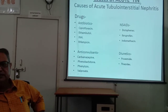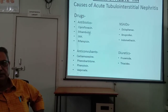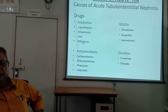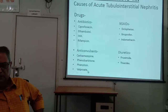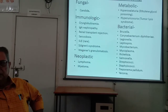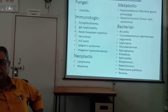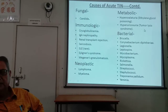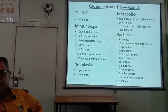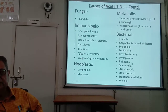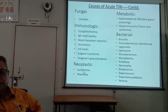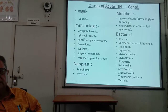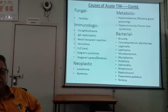Causes of acute tubulo-interstitial nephritis include drugs — antibiotics (ciprofloxacin, ethambutol, isoniazid, rifampicin), NSAIDs (diclofenac, ibuprofen, indomethacin), diuretics (furosemide, thiazides), anticonvulsants (carbamazepine, phenobarbitone, phenytoin, sodium valproate). Also fungal (Candida), metabolic causes (hyperoxaluria, hyperuricosuria, tumor lysis syndrome), and bacterial causes (Brucella, Corynebacterium diphtheriae, Legionella, Leptospira, Mycobacterium, Mycoplasma, Rickettsia, Salmonella, Streptococci, Staphylococci, Treponema pallidum, Yersinia). Neoplastic causes include lymphoma and myeloma. Immunologic causes include cryoglobulinemia, IgA nephropathy, renal transplant rejection, sarcoidosis, SLE, Sjögren syndrome, and Wegener's granulomatosis.